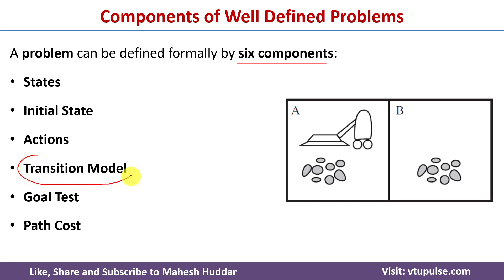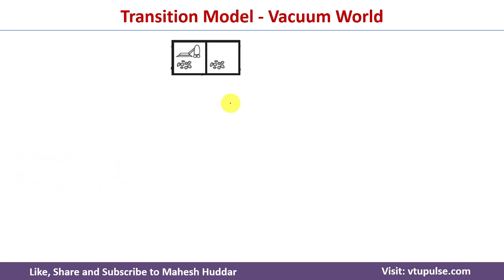In this video we will discuss how to draw a transition model for this vacuum world example in detail. In the transition model, we will apply all possible actions to a given state and then see how it moves from one state to another state. We will do it for all possible states.